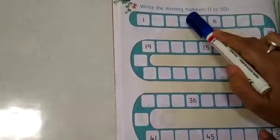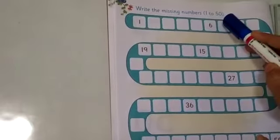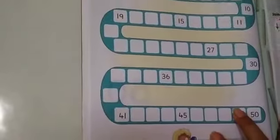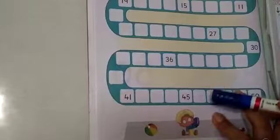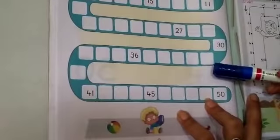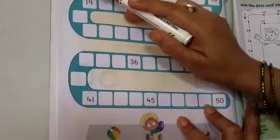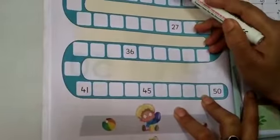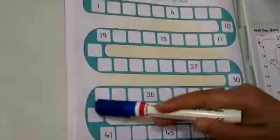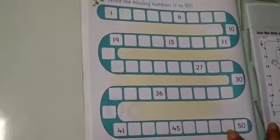Write the missing numbers 1 to 50. Some numbers are given, but not all the numbers. We will practice this. We will write 1 to 6 and complete it.